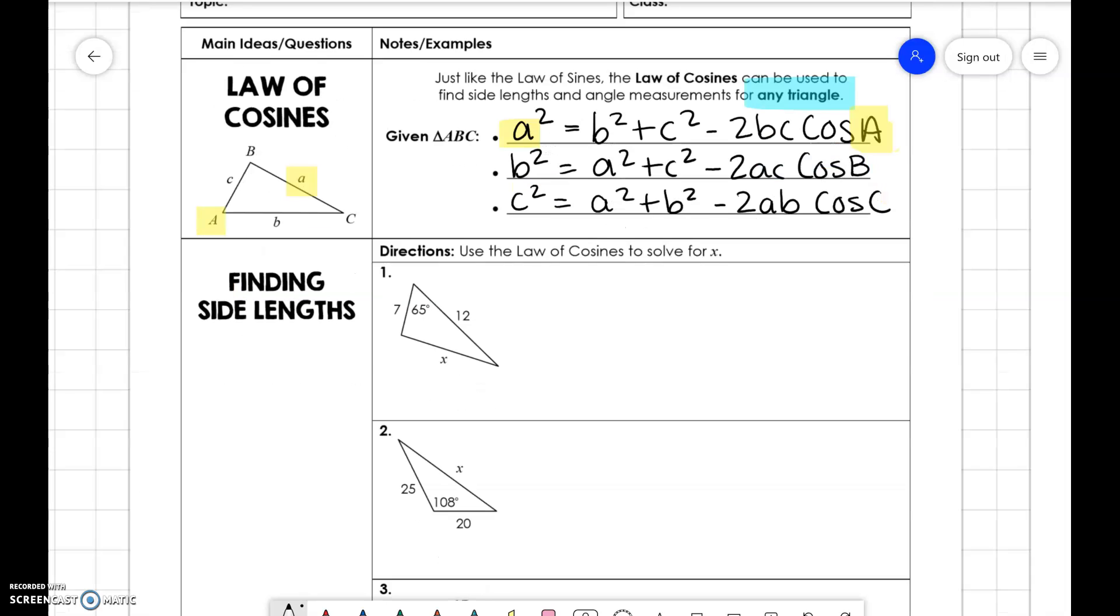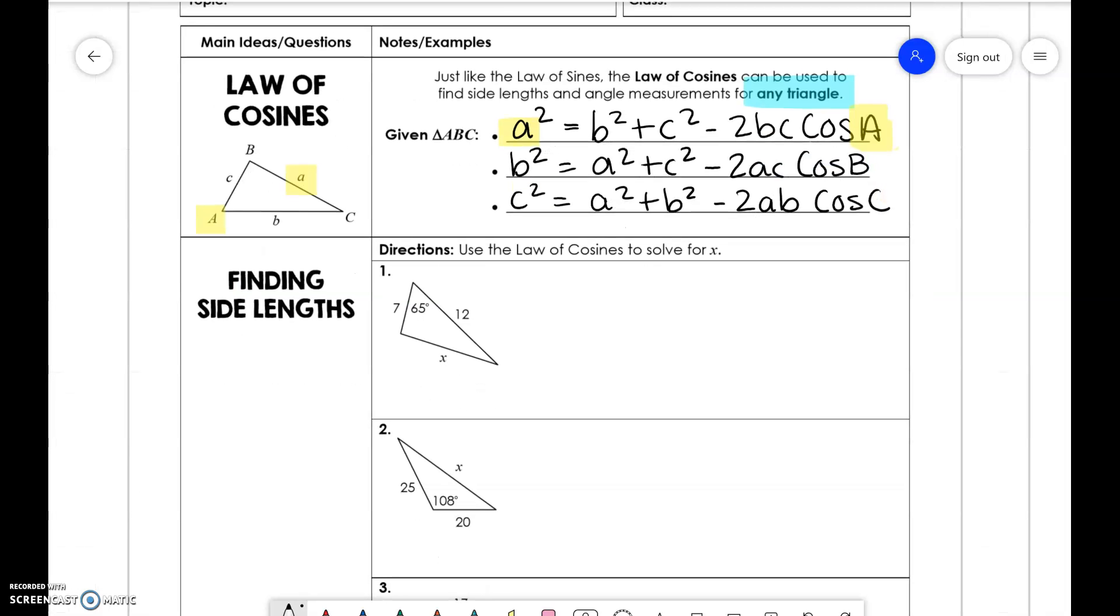So let's try this. So if we have a, b, and c, we'll name those. We'll do a, b, and c. This has to be what angle a is. So angle a has to be 65. So what we would do is we would say x squared is equal to 7 squared plus 12 squared minus 2 times 7 times 12 times cosine of 65.